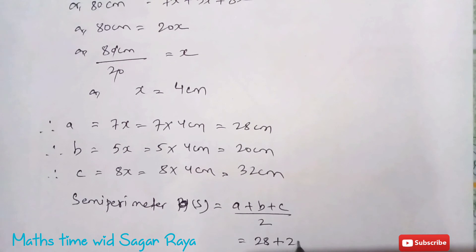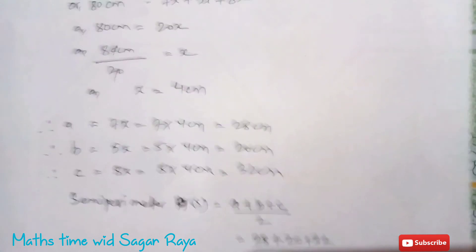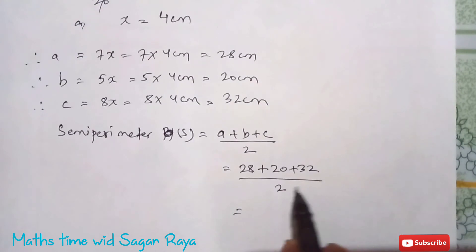So 28 plus 20 plus 32 all divided by 2. If you just add this you will get 80 divided by 2 which is equal to 40 cm.